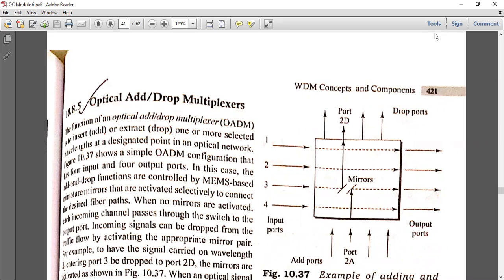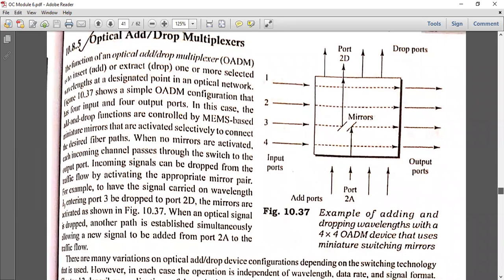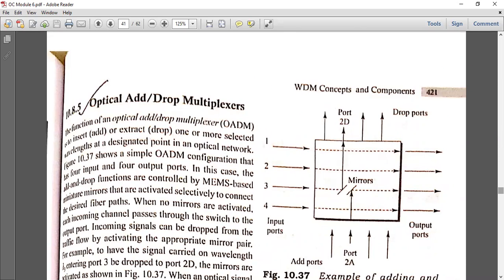This is an important component in WDM. The function of an optical add drop multiplexer, or OADM, is to insert or add, or extract or drop, one or more selected wavelengths at a desired point in an optical network.